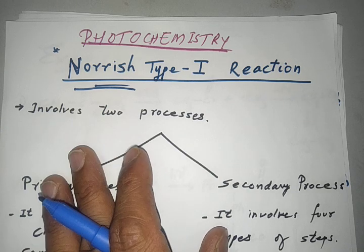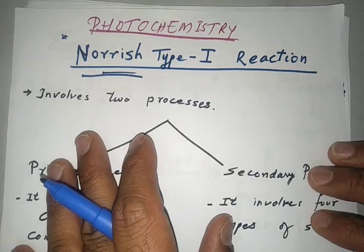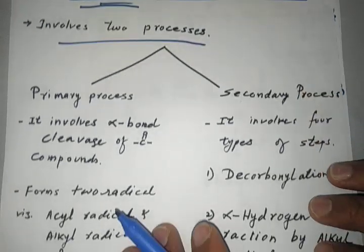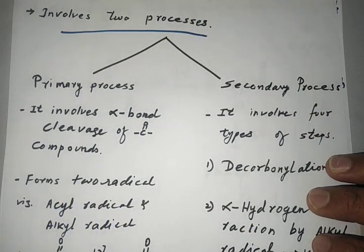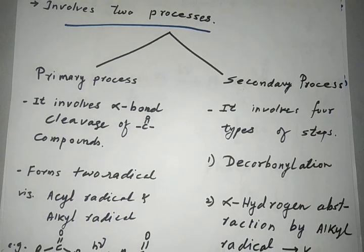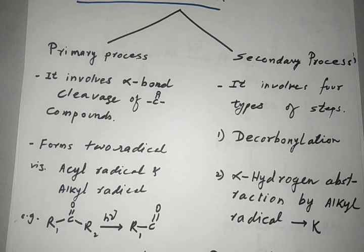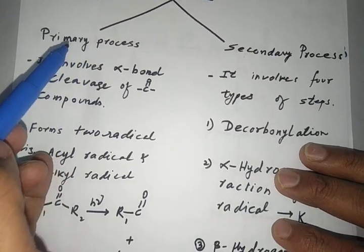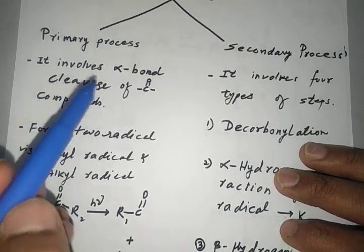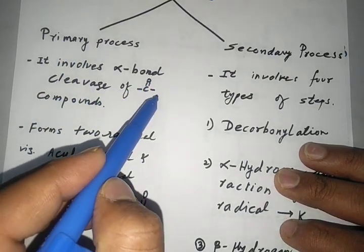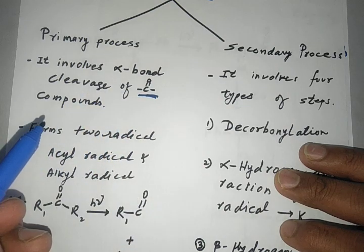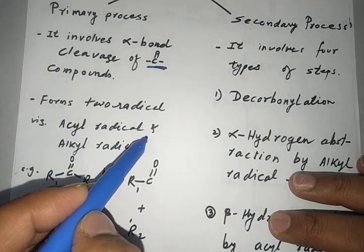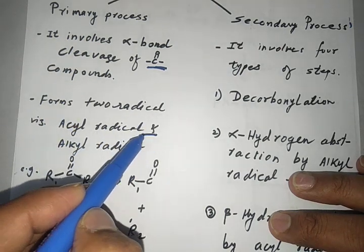The Norrish Type 1 reaction involves two processes: the primary process and the secondary process. We know well about the alpha bond and beta bond — the alpha bond is directly bonded to a functional group. The primary process involves cleavage of the alpha bond adjacent to the carbonyl carbon.